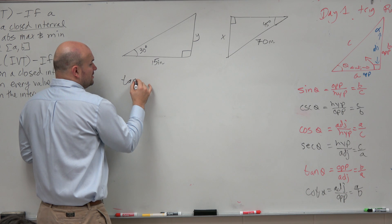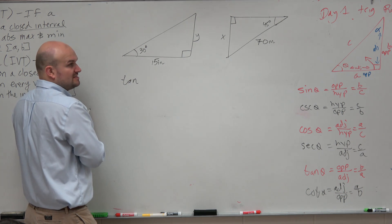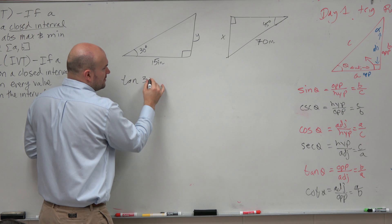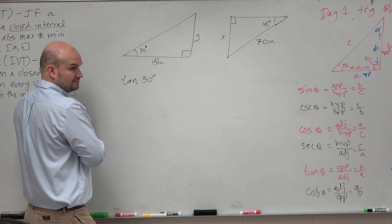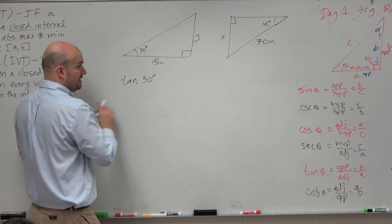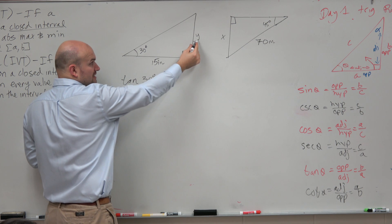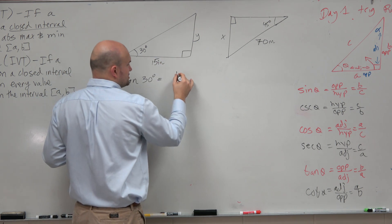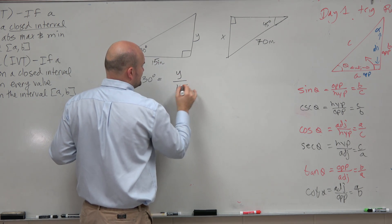Now again, do not write tangent equals opposite over hypotenuse. It's always the tangent of 30 degrees, right? OK, that is equal to the opposite over the adjacent, which is y over 15.